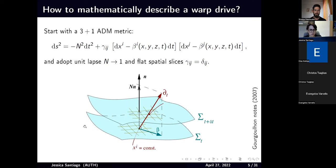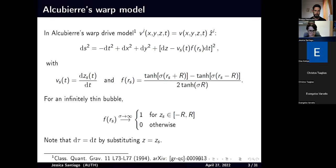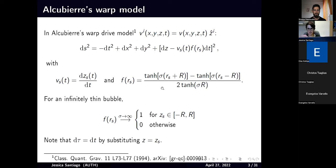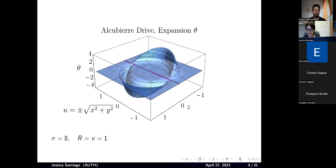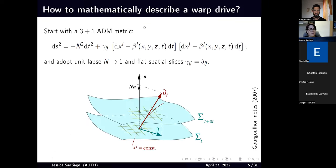Question from audience: What is R and what is RS in the metric? The R is the warp bubble radius. The RS is actually the position you're going to be at. So RS can vary, but R is the fixed radius.